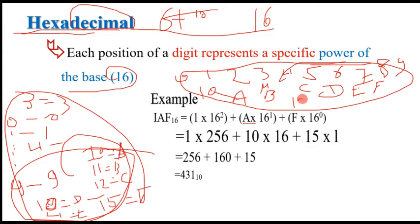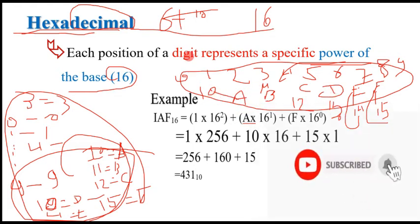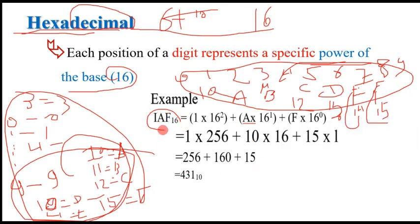To recap: A represents 10, B represents 11, C represents 12, D represents 13, E represents 14, and F represents 15. So 15 corresponds with F, 14 with E, 13 with D, and 10 with A. These are the hexadecimal symbols. In order to convert a hexadecimal number to decimal — for example, 1AF with base sixteen — the base sixteen indicates this representation is hexadecimal.